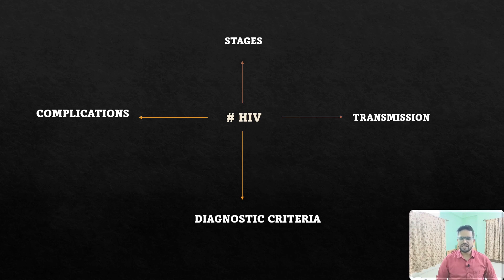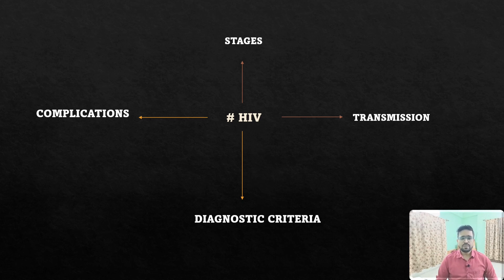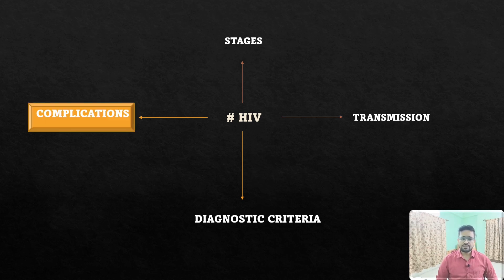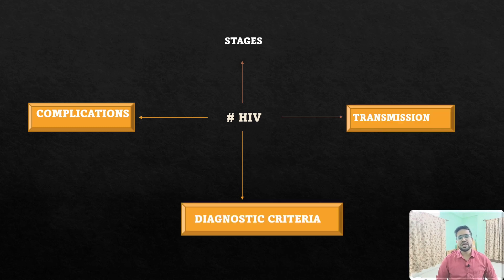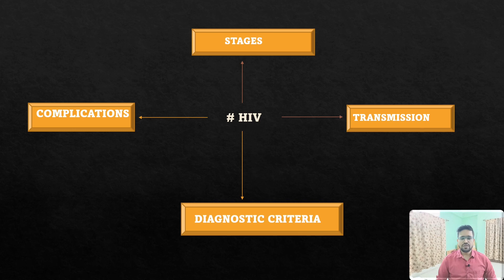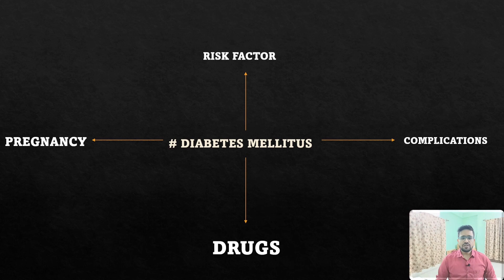For HIV, the topics being repeatedly asked over the last five years include: stages of HIV, transmission, diagnostic criteria, and complications of HIV — which were also mentioned under the pregnancy topic. You must read all of these: complications, transmission, diagnostic criteria, and stages, as they will definitely help during your examination.